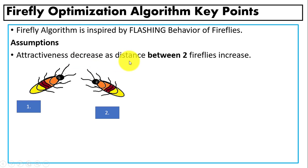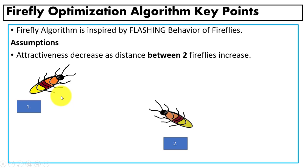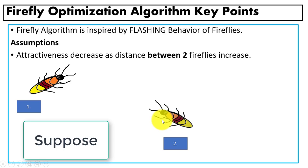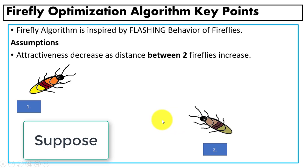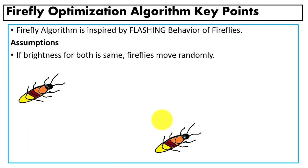The second assumption is that attractiveness decreases as the distance between two fireflies increases. As you can see, brightness decreases as the distance between two fireflies increases.